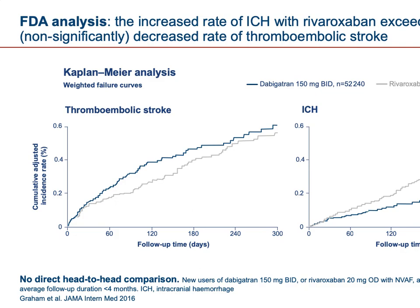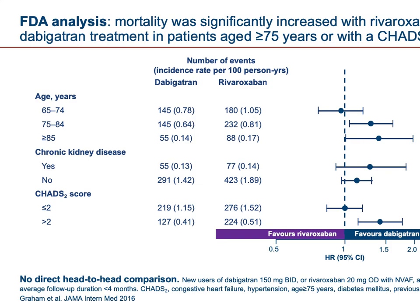For intracranial hemorrhage, curves begin diverging as early as one month after initiation. For thromboembolic stroke, while some argue there is higher association with dabigatran early on, in long-term follow-up spanning over a year, the curves start converging after about eight months and are almost similar by around ten months. Therefore, we must look at the overall picture across many parameters rather than any single outcome.